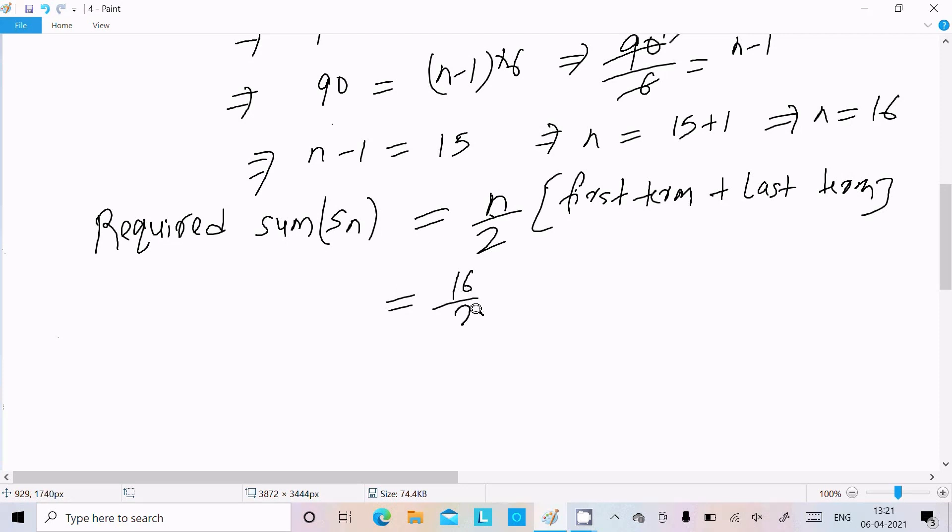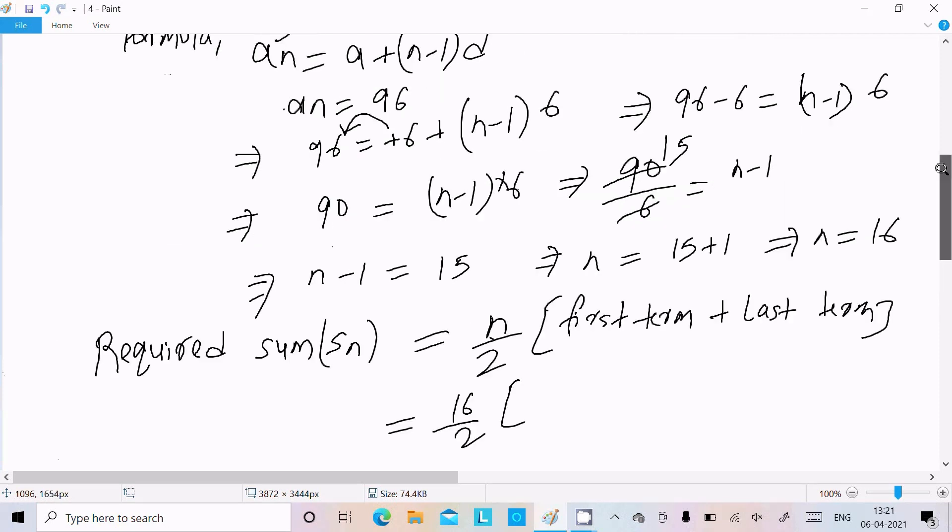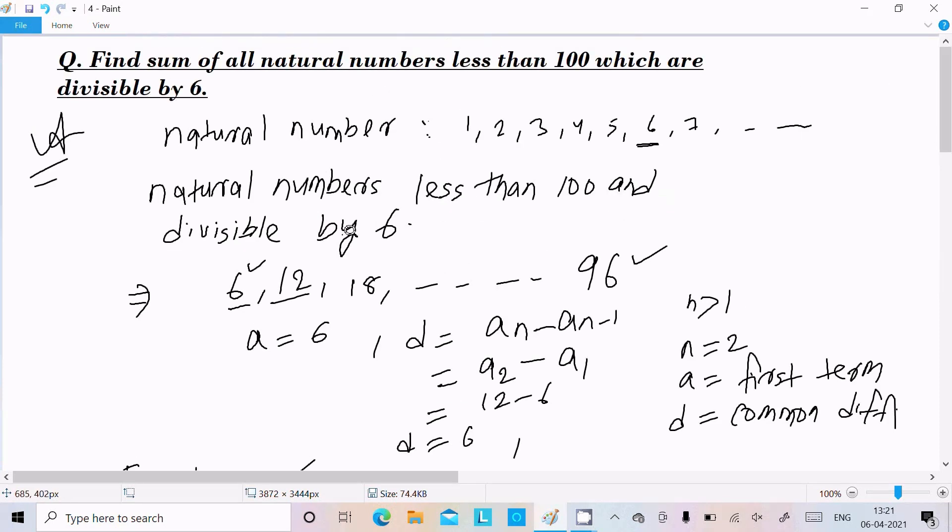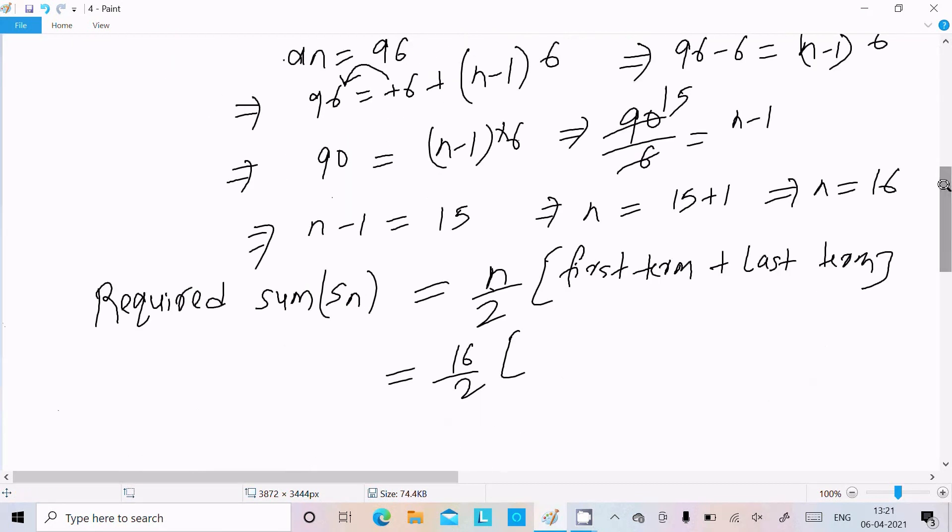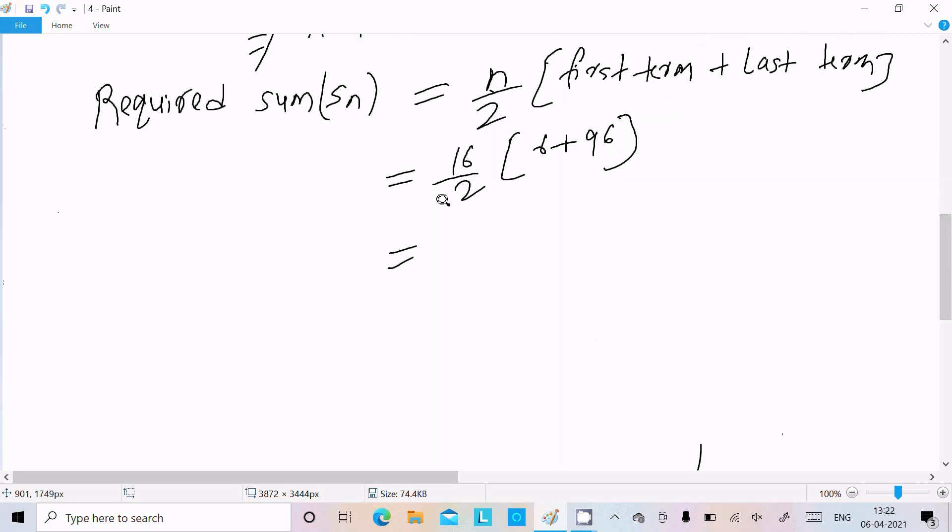n value is 16 divided by 2, first term is 6 and the last term is 96, so 6 + 96. Here let's do, it cancels 8 times. 8 × (6 + 96).